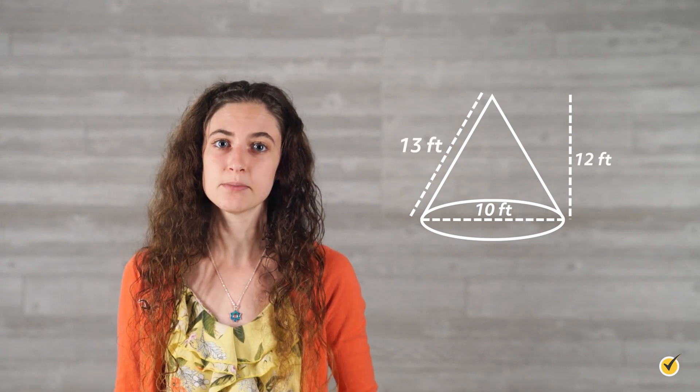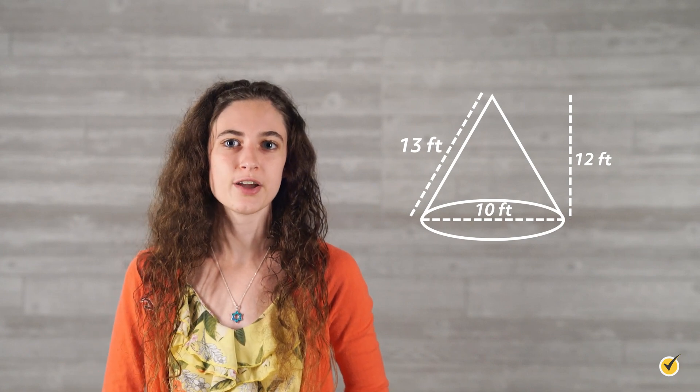With all of this in mind, let's look at our final example. Say we have a huge cone whose base's diameter measures 10 feet, height measures 12 feet, and would need a 13-foot-long rope to connect a straight line from the tip to the edge of the base.